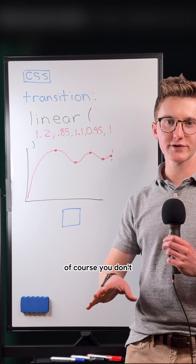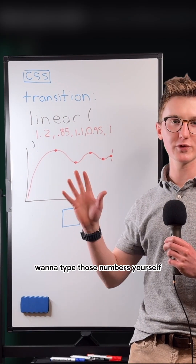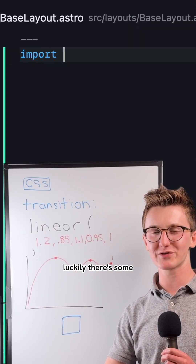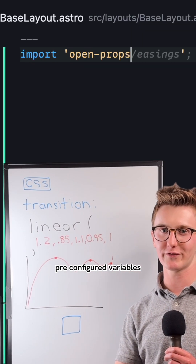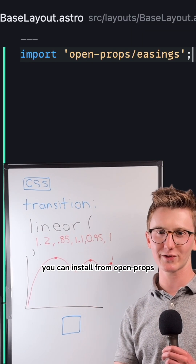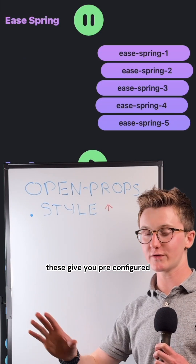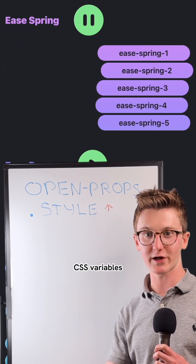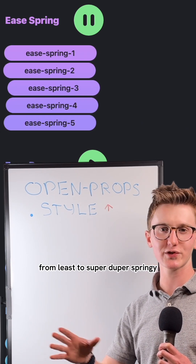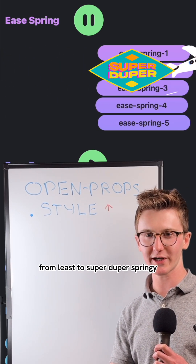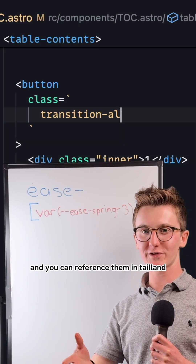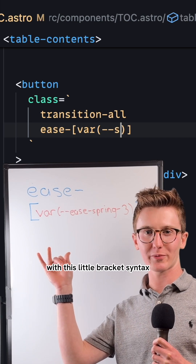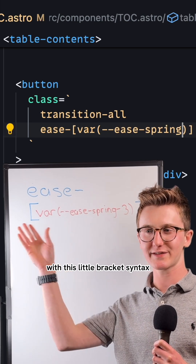Of course, you don't want to type those numbers yourself. Luckily, there are some pre-configured variables you can install from OpenProps. These give you pre-configured CSS variables ranging from least to super duper springy, and you can reference them in Tailwind with this little bracket syntax.